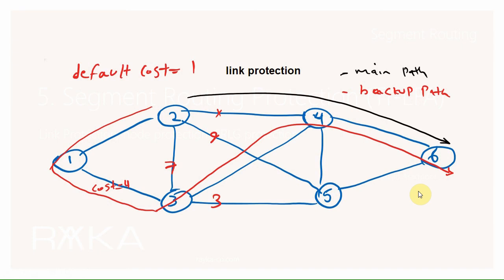Fast reroute or protection in segment routing is simple to understand, operate, and is completely automatic. Although fast reroute also exists in MPLS networks, it is not as simple to configure and operate as segment routing, and it is not completely automatic. We will implement and troubleshoot the same topology in the next video.